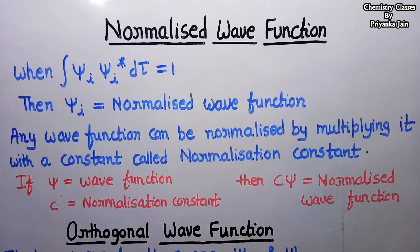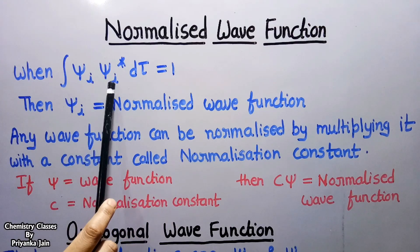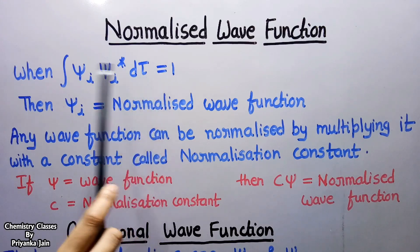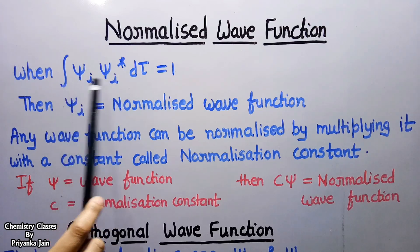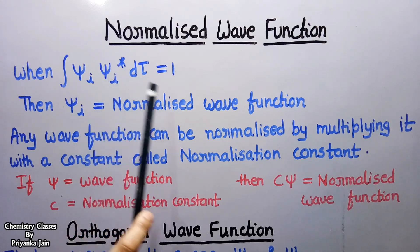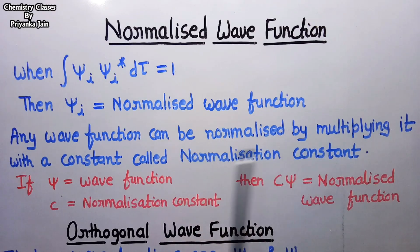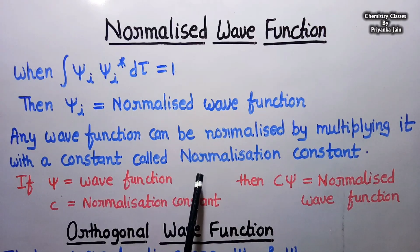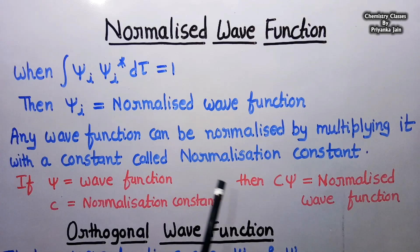The next term is the normalized wave function. When the condition ∫ψᵢ · ψᵢ* dτ = 1 is satisfied — meaning a wave function multiplied by its complex conjugate and integrated equals 1 — such a wave function is known as a normalized wave function. Any wave function can be normalized by multiplying it with a constant C, known as the normalization constant. The result C·ψ will be the normalized wave function.